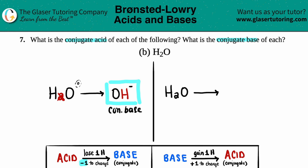I have two hydrogens, so I bump this number up. Instead of H2O, it would be H3O. And to get the charge for a conjugate acid, you just add one to the overall charge. Water had a zero charge, so zero plus one is positive one — H3O⁺.